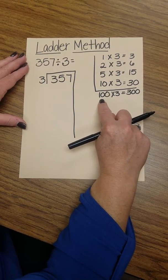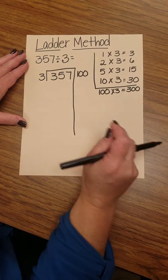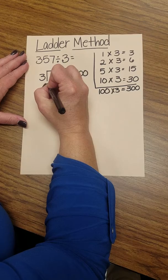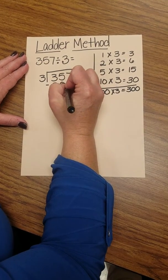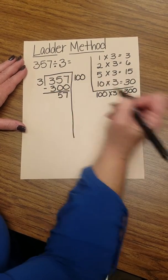So the first tool I'm going to use is 100. I like to use the largest tool that I can, and 100 times 3 gives me 300. So I subtract the 300, and that leaves me 57.